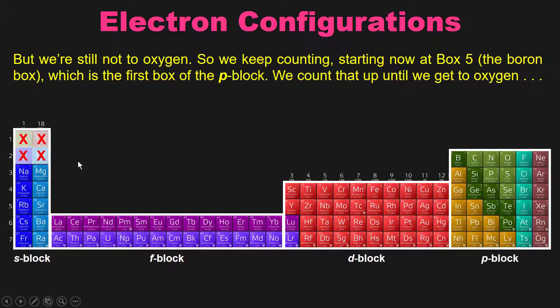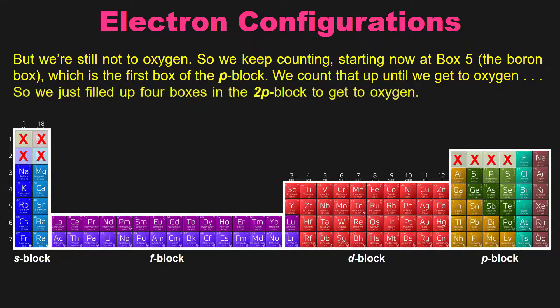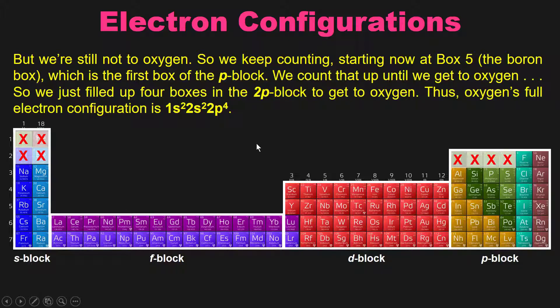Now, obviously, we are not yet to oxygen. So we have to keep counting. The next element after beryllium is over here at boron, box 5. So this is the first box of the P block. This is on row 2. So this is the 2p. So we then continue counting until we get to oxygen. We're here at 2p, and we go 1, 2, 3, and then 4. And now we're at oxygen. So we've just filled up four boxes in our 2p block to get to oxygen. We say then that oxygen's full electron configuration is 1s2, 2s2, 2p4. Does that make sense?